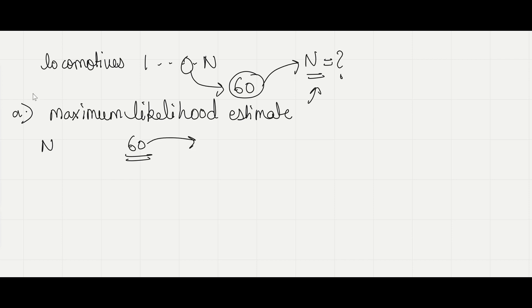So our maximum likelihood estimate for capital N would be 60 because any number less than 60 would confirm that the 60 numbered locomotive does not exist. So our maximum likelihood estimate for capital N would be 60.